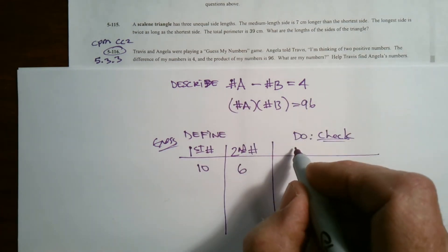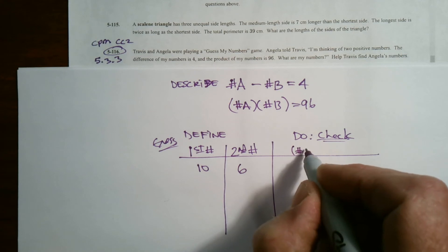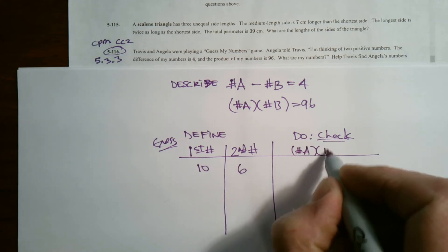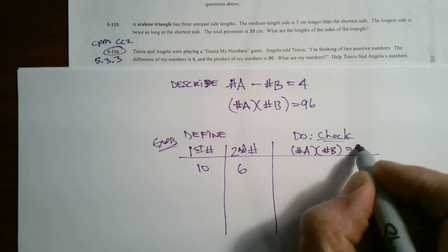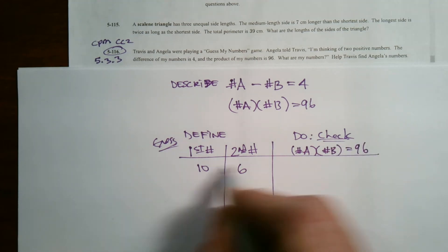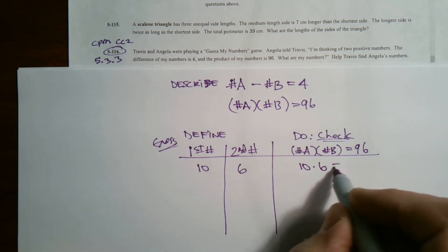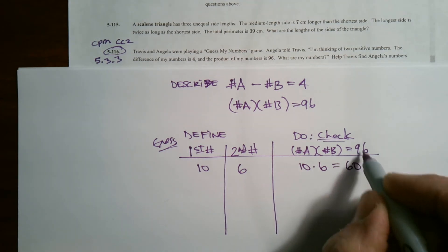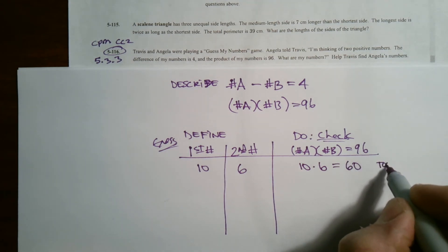And then my check is going to be that product, the fact that the first number times the second number is equal to 96. So let's take those two that I have now. 10 times 6 equals 60. So that's not 96. It's too low.